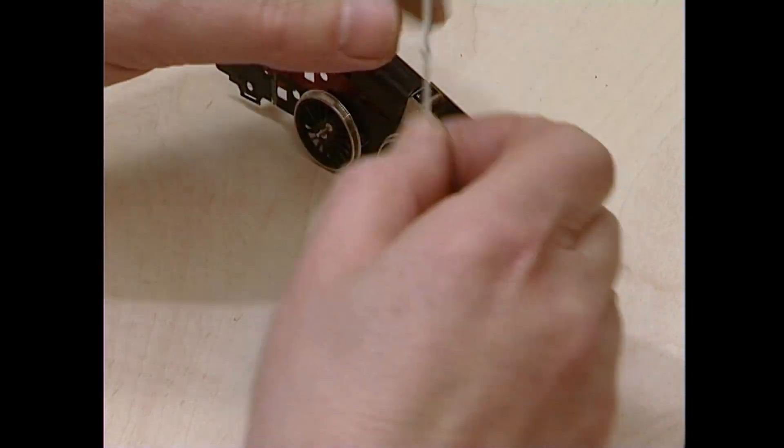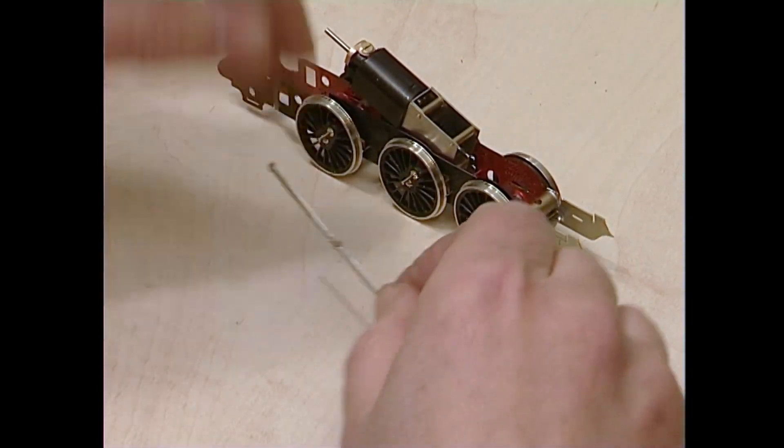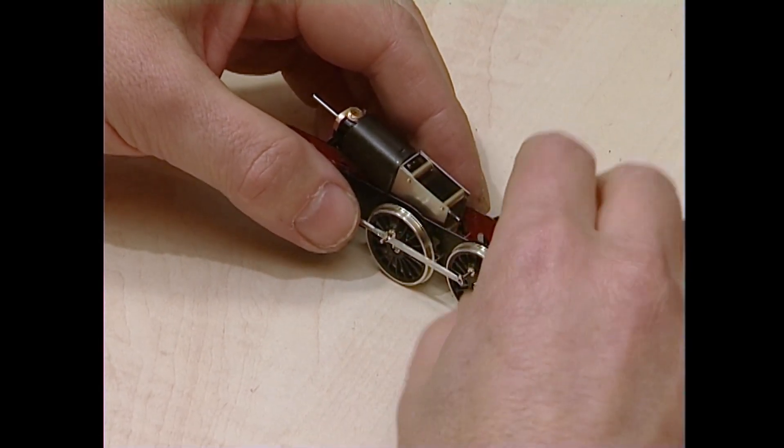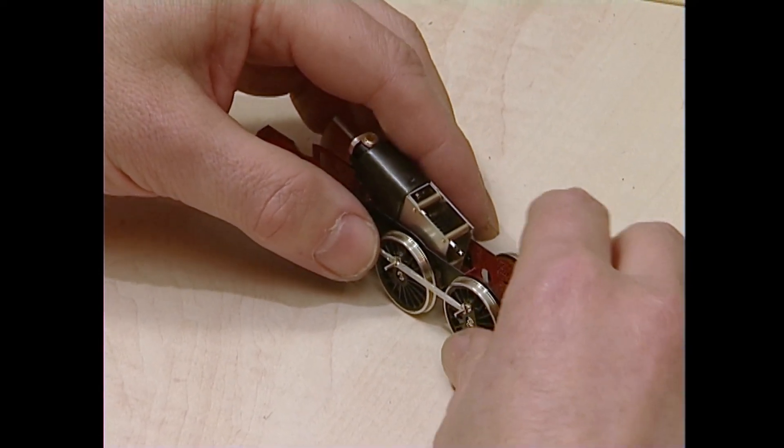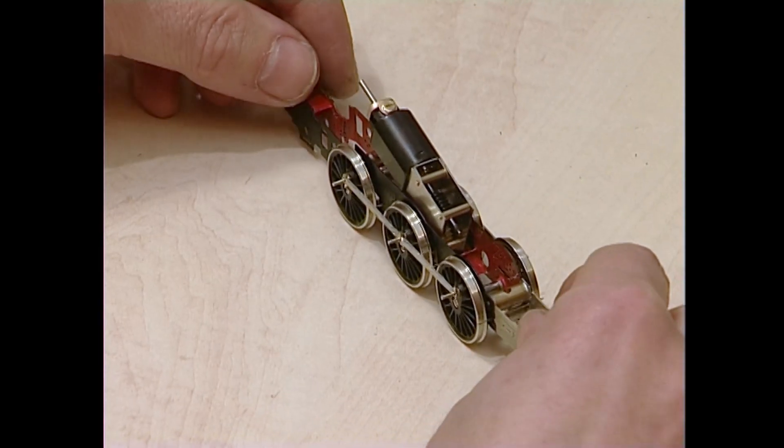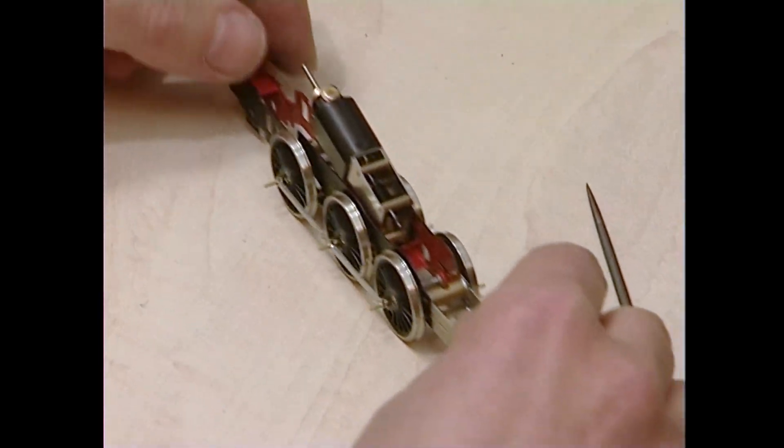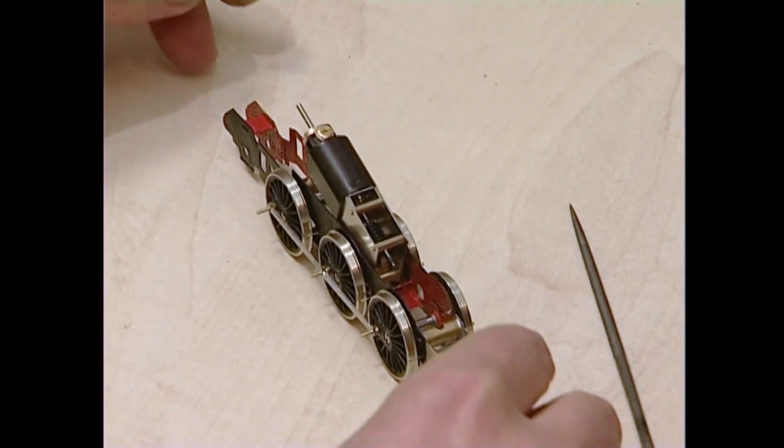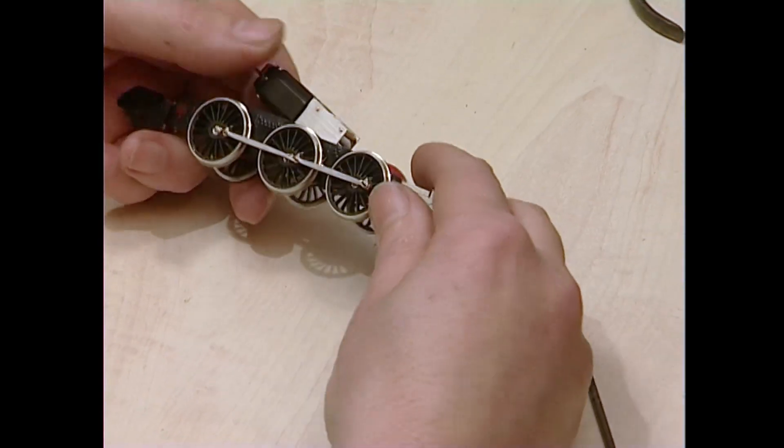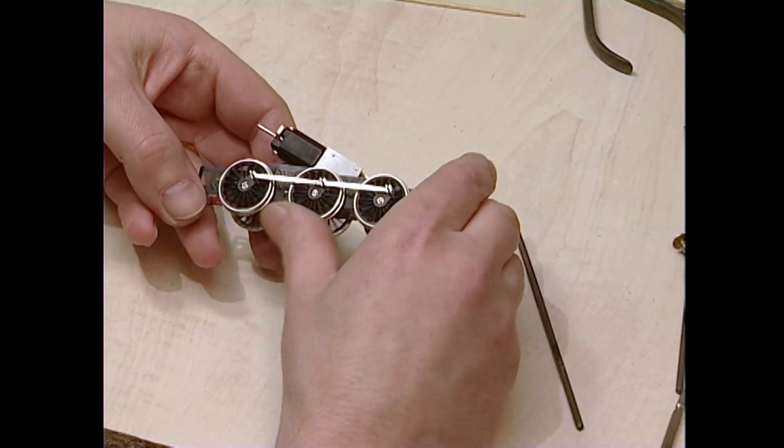Put the other side on. Again, temporarily, I'm not fixing the rods yet. The gearbox, by the way, isn't engaged. It's free to revolve the axle. And do a rolling test on your bench. There should be no interference, no binding, nothing like that.